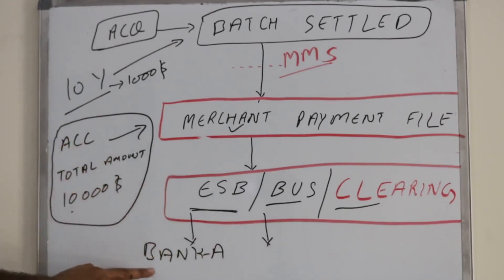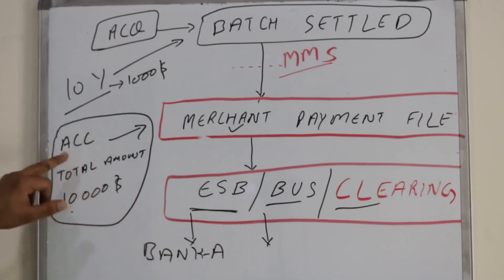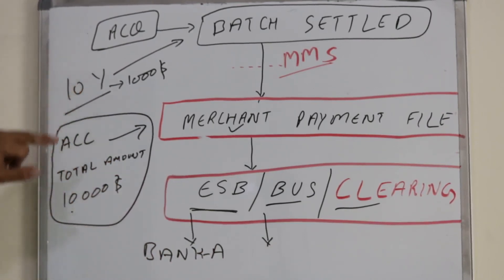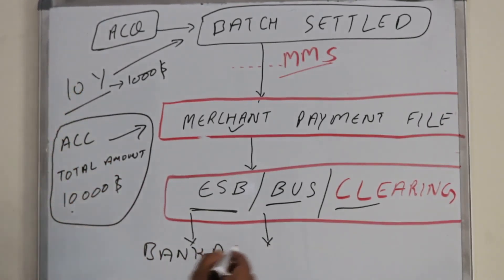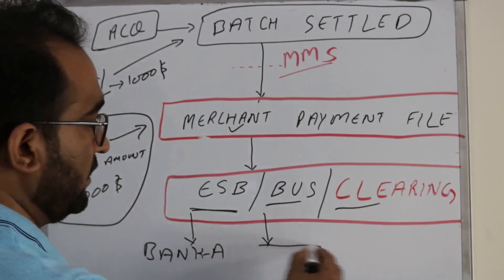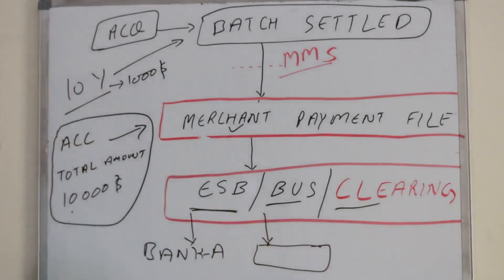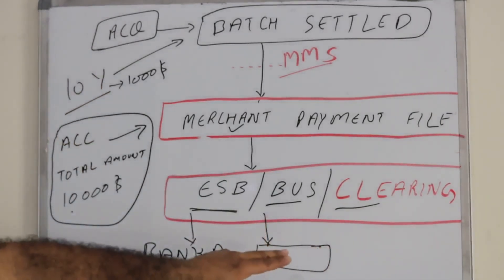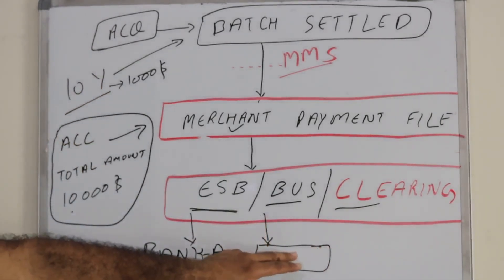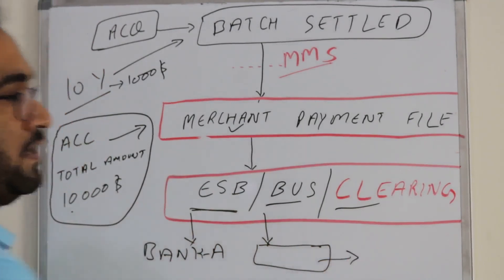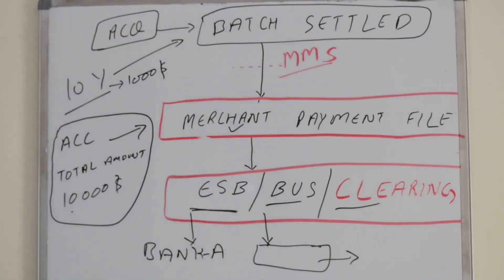If the merchant has an account in the same acquiring bank, the file goes to bank A. If the merchant has an account in some other bank, the ESB system can submit the file to the centralized bank. Every country has its own centralized bank.